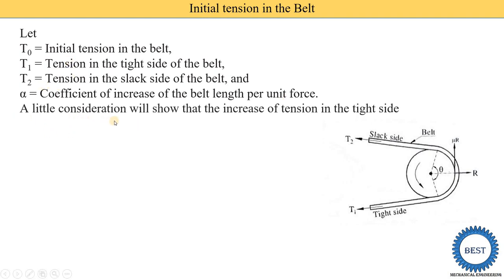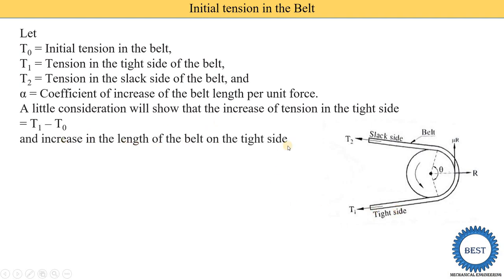The increase of tension in the tight side is T1 minus T0, since there is already initial tension present. The increase in the length of the belt on the tight side is therefore alpha multiplied by (T1 − T0). This is Equation 1.